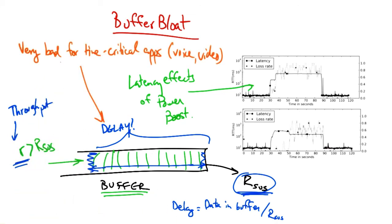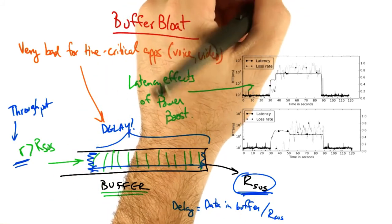These large buffers can introduce delays that ruin the performance for time critical applications such as voice and video. These large buffers actually show up all over the place.